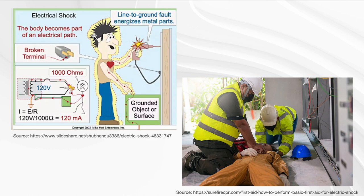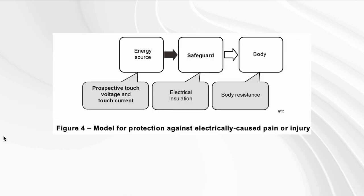I found this image on the internet — it's very visual. Basically, the body becomes part of an electrical path. This is high voltage and/or high current, and it can go through the body like this. It's very dangerous and can severely injure people or kill them.